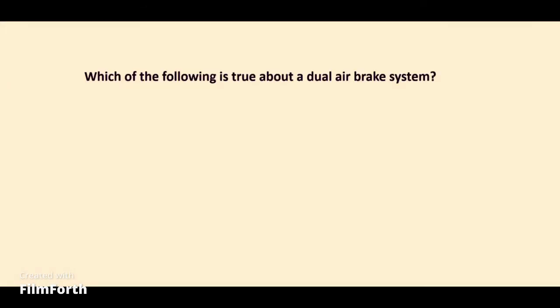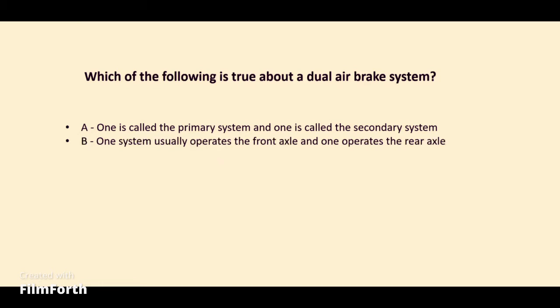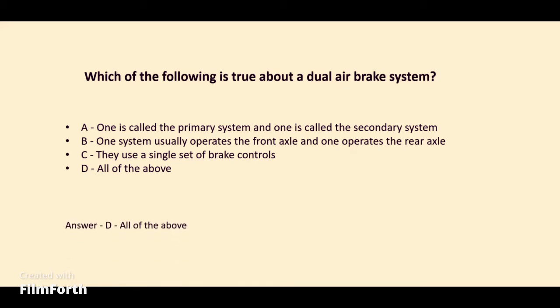Which of the following is true about a dual air brake system? A. One is called the primary system and one is called the secondary system. B. One system usually operates the front axle and one operates the rear axle. C. They use a single set of brake controls. D. All of the above. The answer: D. All of the above.